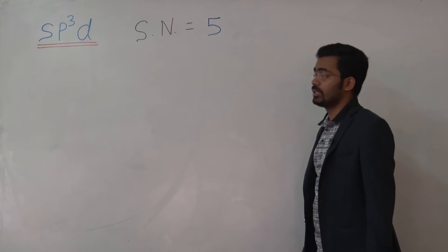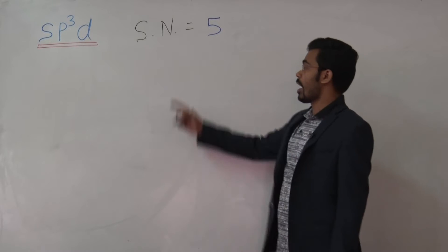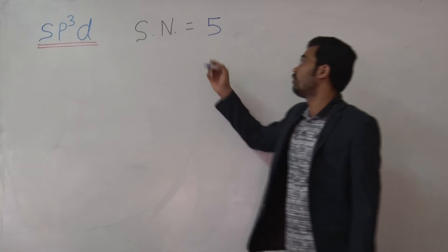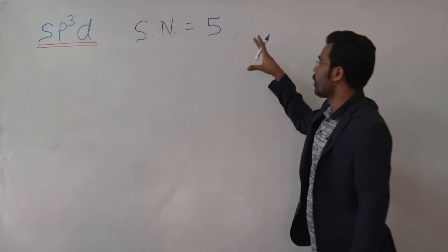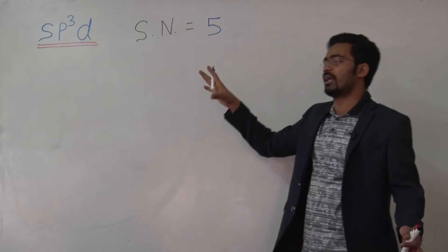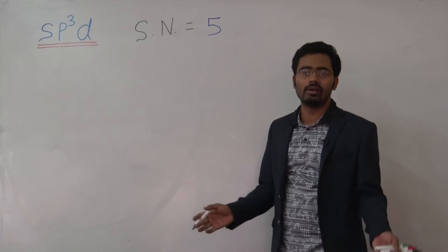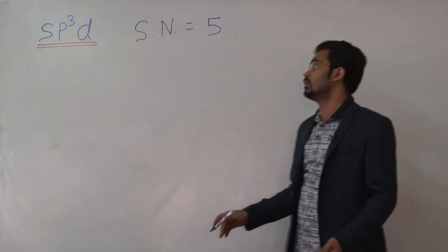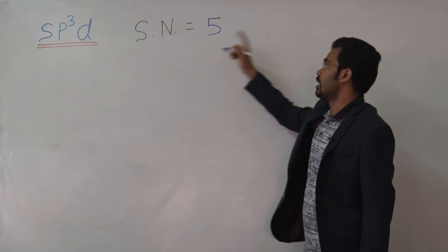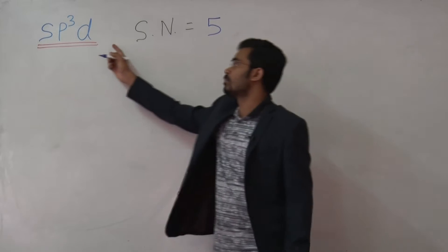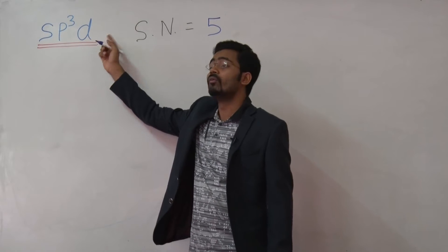What is the possibility of a steric number? SP3D has a steric number of 5. SP3D has a steric number of 5 because it has 5 orbitals involved. It is formed by mixing of 5 orbitals.